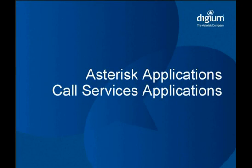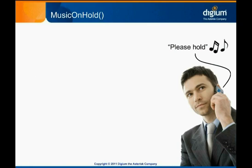In addition to the basic call control applications, there are numerous call services applications. Using these, you can add common telephony features to your Asterisk system. Music on Hold is one example. The default Asterisk installation comes with audio files available under a Creative Commons license, and it's pre-configured so that the Music on Hold dial plan application works out of the box.